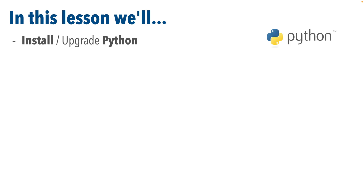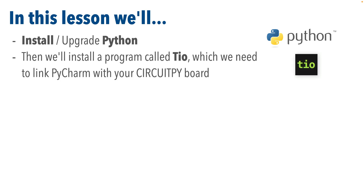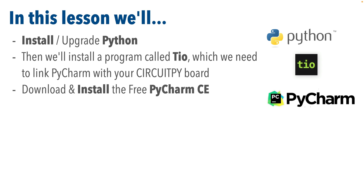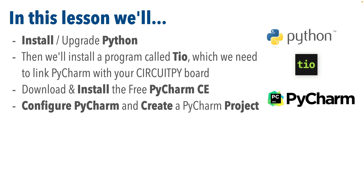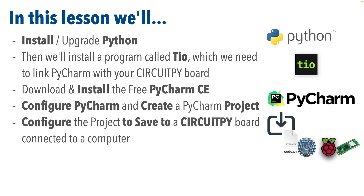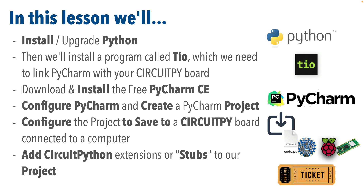Here's what we'll do: we'll install or upgrade Python on your computer, then install a program called TIO, which we'll need to link PyCharm with our CircuitPy board. We'll download and install PyCharm CE — that's the free version. Then we'll configure PyCharm and create a PyCharm project for CircuitPython, set the project up so it saves our program to the CircuitPy board, configure it to recognize CircuitPython extensions beyond basic Python by adding the CircuitPython stubs. Once we do all that, we'll finally be ready to start our coding lessons.